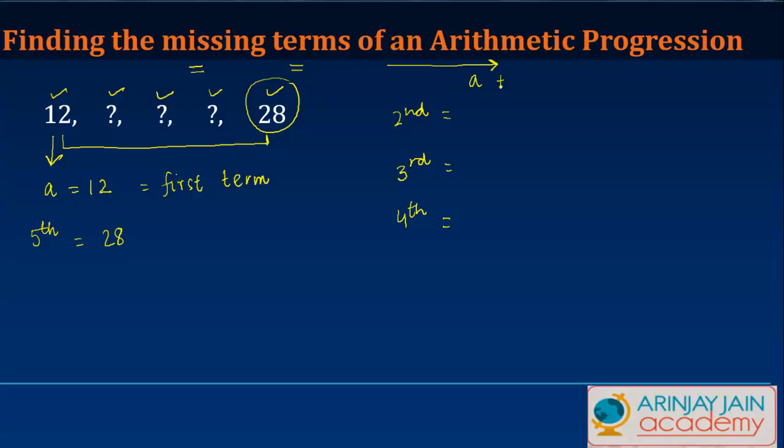So in order to find out the second, third and fourth value we need to know the first term which in our case is 12, plus n minus one.